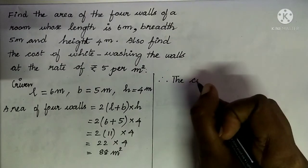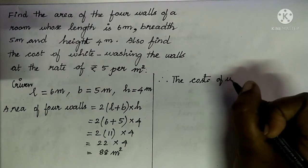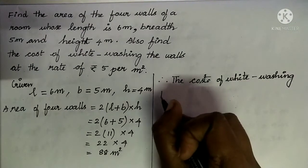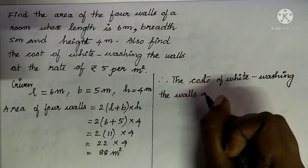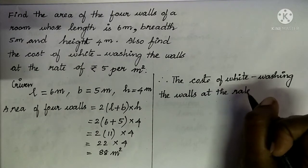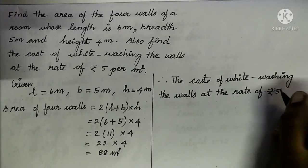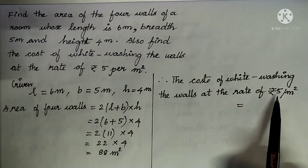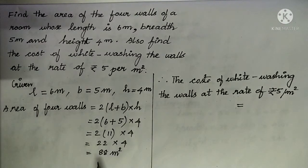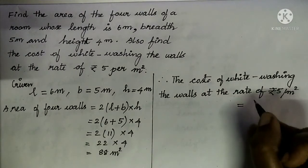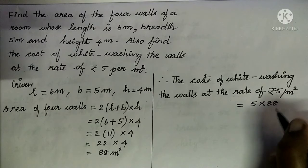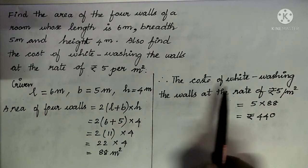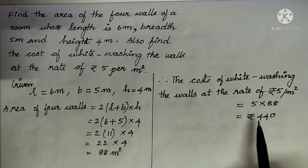After finding the area of the 4 walls, we are asked to find the cost of whitewashing at the rate of rupees 5 per meter square. The cost of whitewashing one meter square is rupees 5, so to find the cost of 88 meter square, we multiply 88 by 5. Rupees 5 into 88 is rupees 440. So the cost of whitewashing the walls at the rate of rupees 5 per meter square is rupees 440.